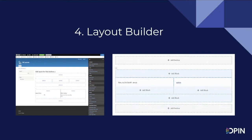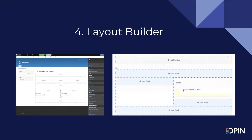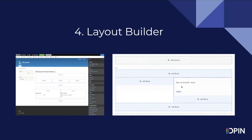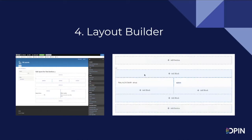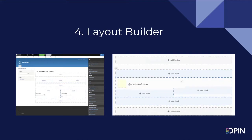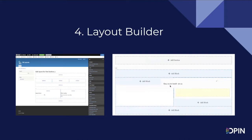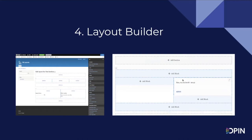Drupal 8.7 is fully navigable by keyboard. Drupal is already widely known for having one of the most robust back ends of any content management system, making it a popular choice for large enterprises. Drupal 8.7 proves it's possible to have the best of both worlds — as site-building tools narrow the gap between enterprise and non-enterprise websites, Drupal still stands apart.